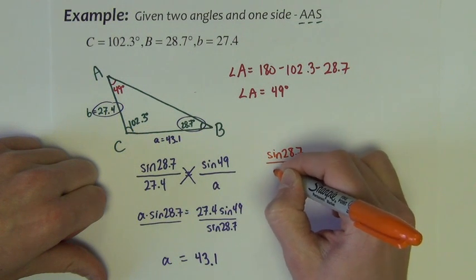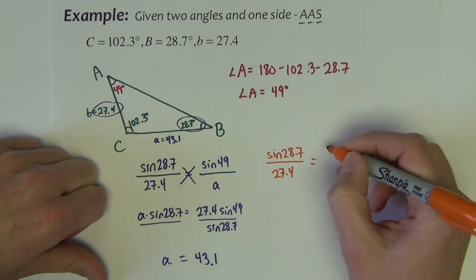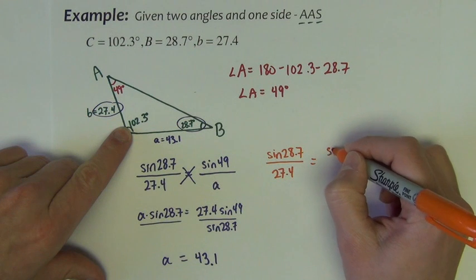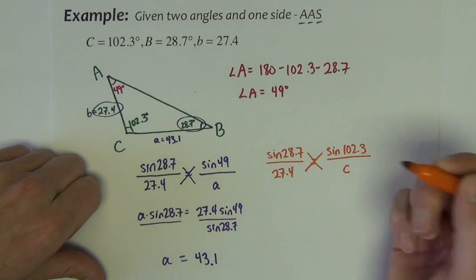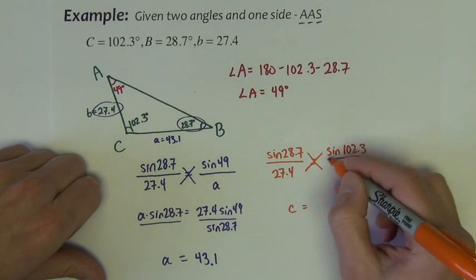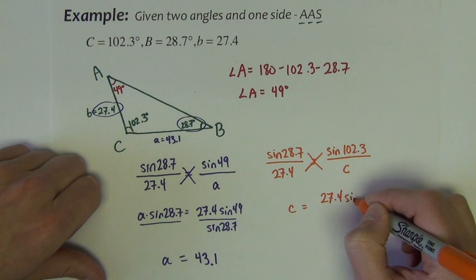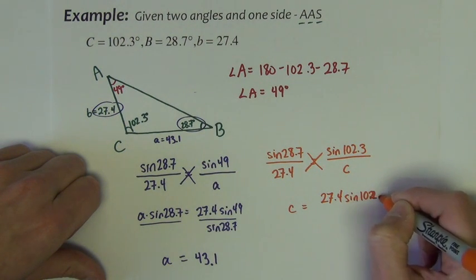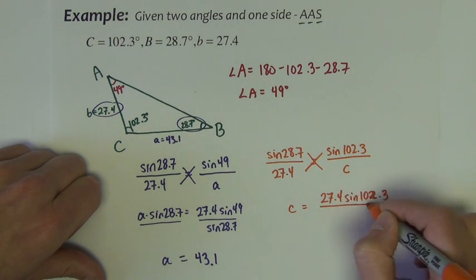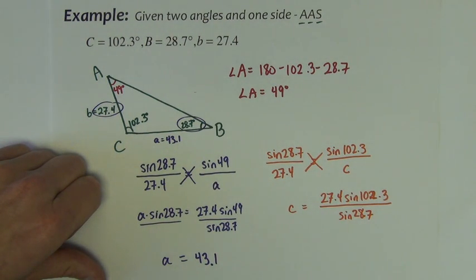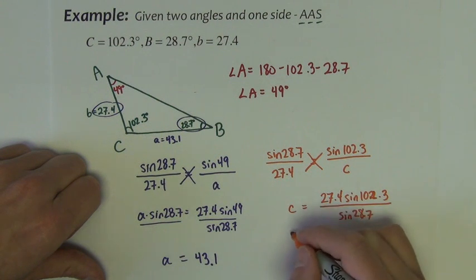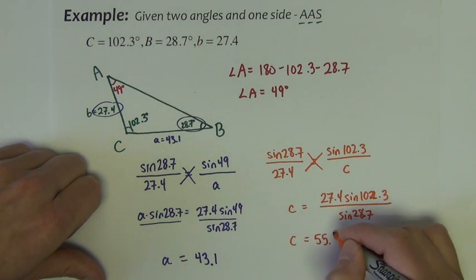Cross multiply again. We're going to be multiplying 27.4, sine 102.3, and we'll, of course, be then dividing by sine of 28.7. The answer comes out to be 55.7.